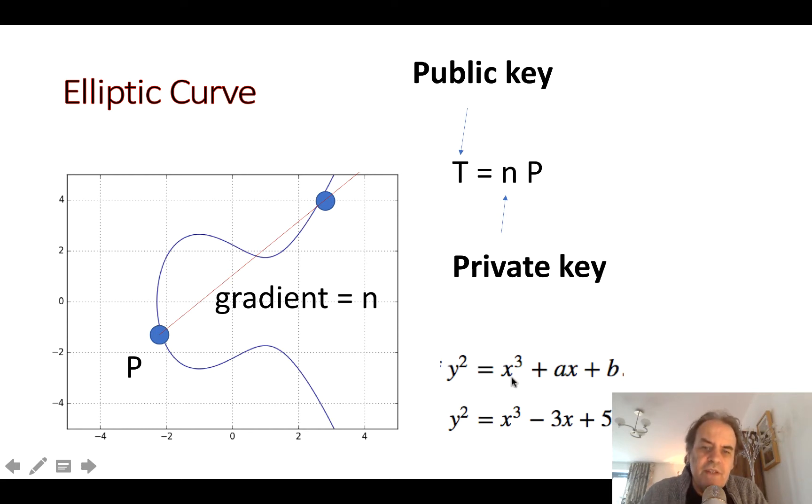An elliptic curve has this type of form: y squared equals x cubed plus ax plus b. This is an example here of y squared equals x cubed minus 3x plus 5. One thing you should notice is that it reflects around the x-axis.